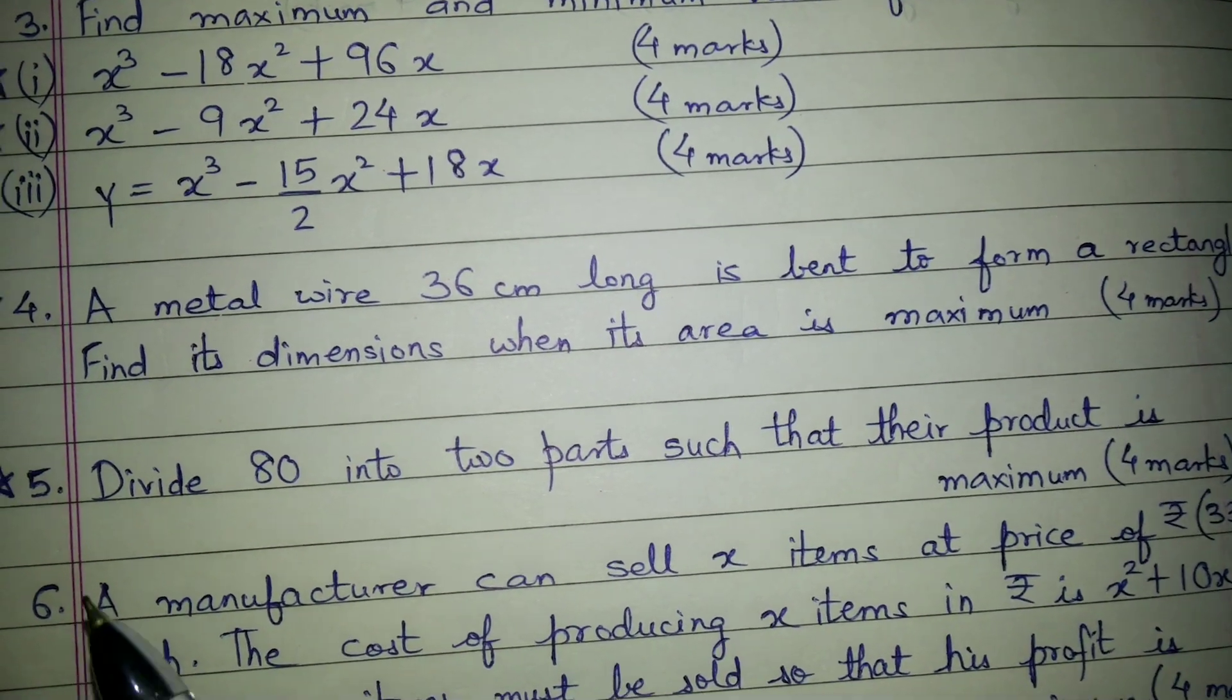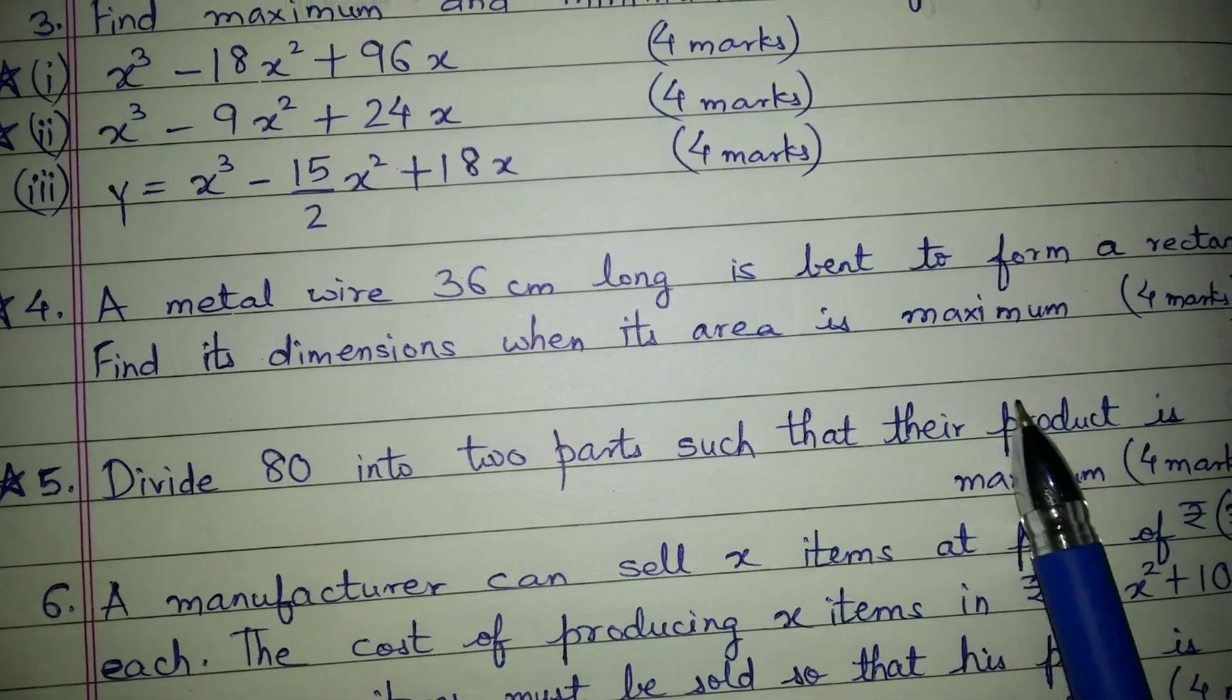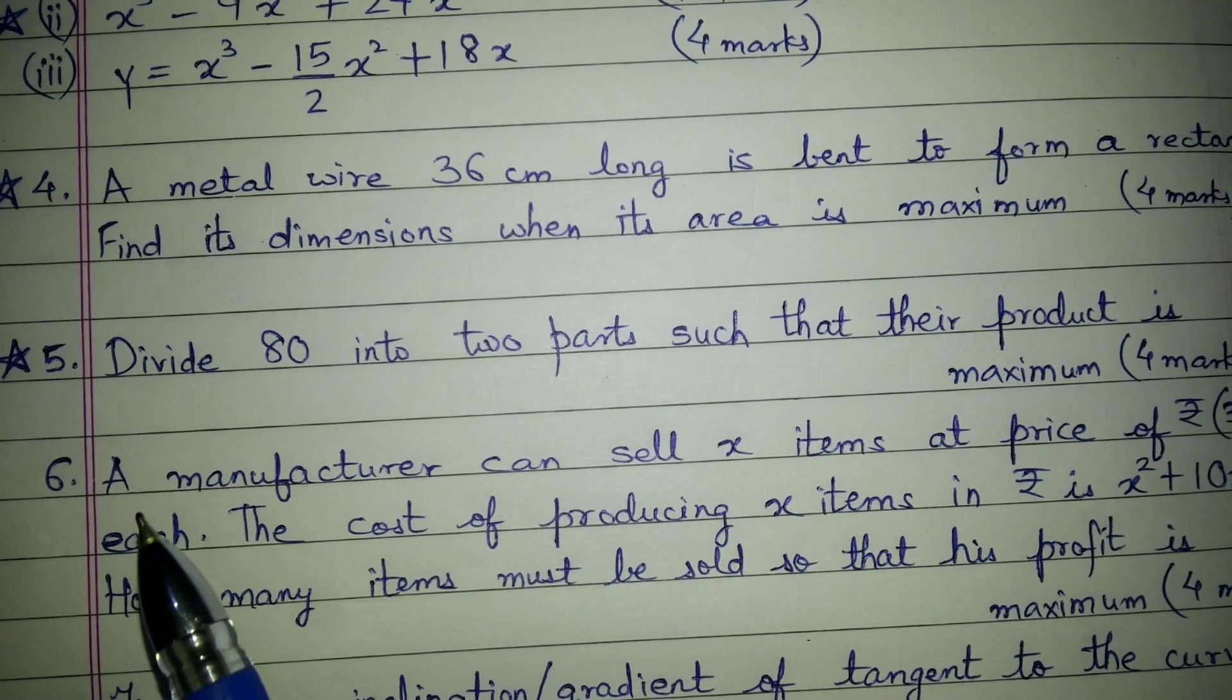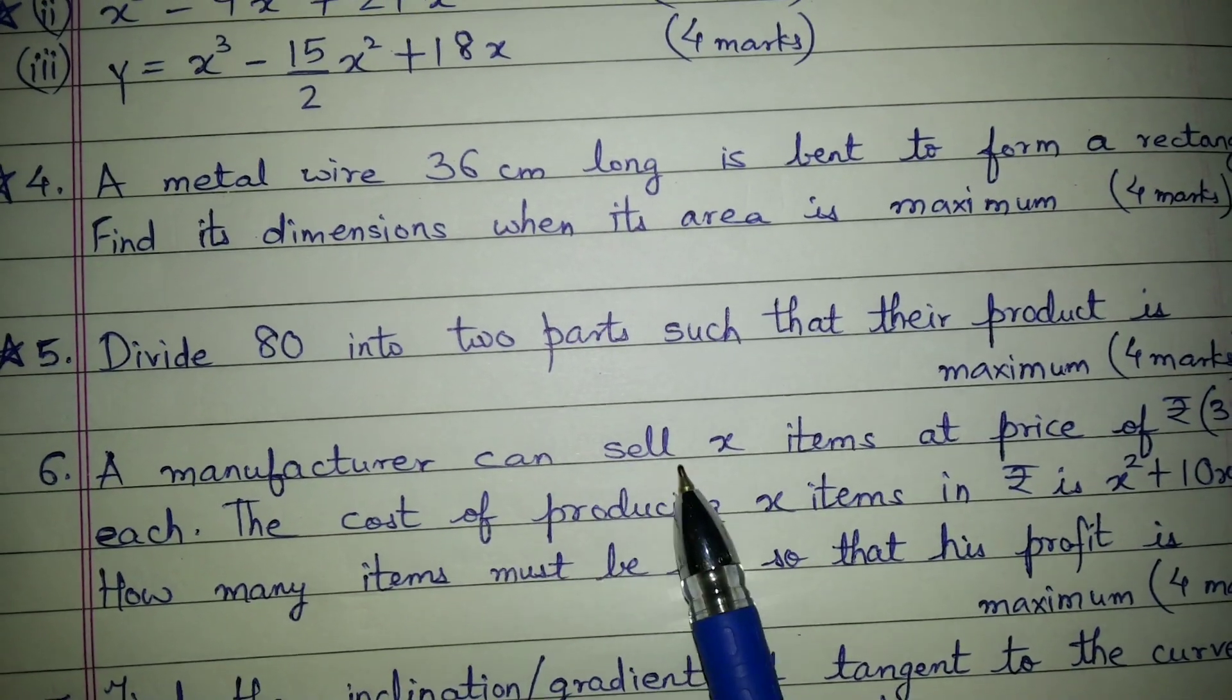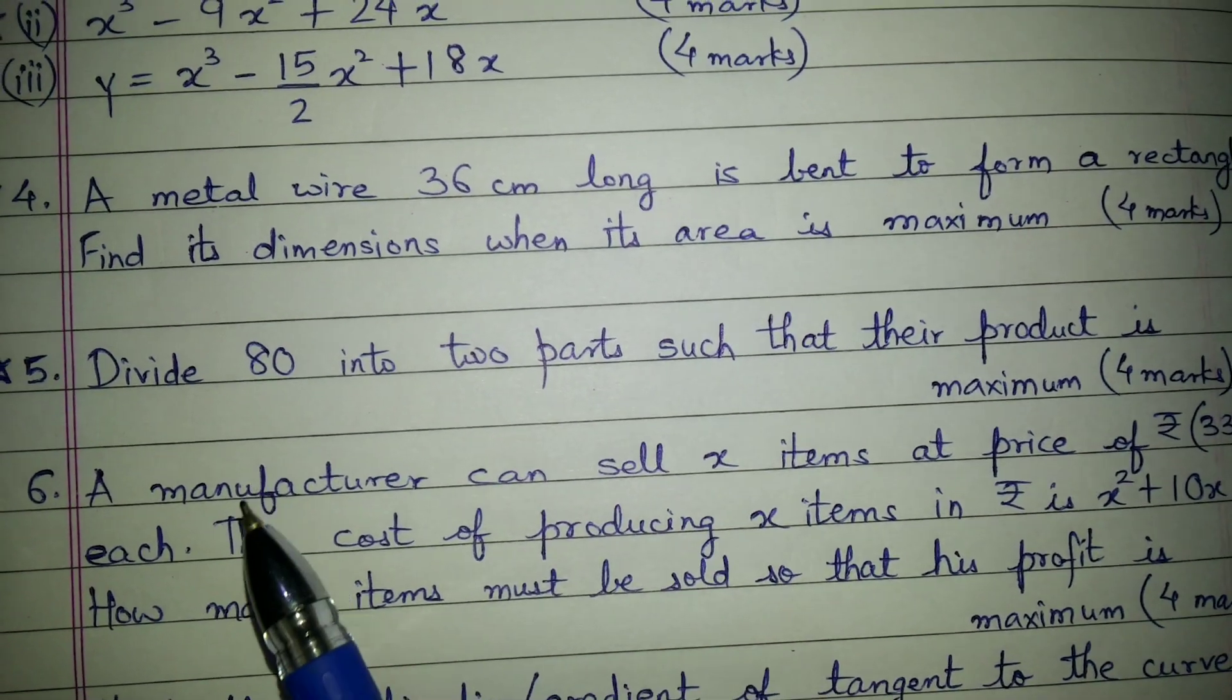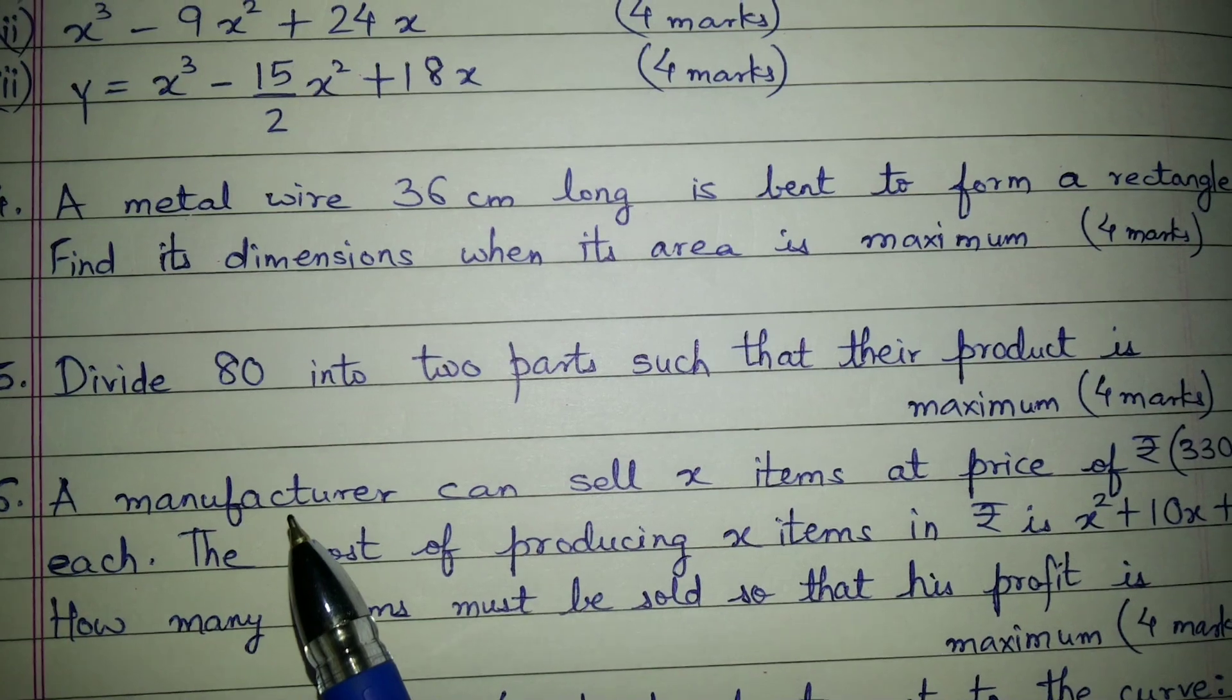This can be asked for four marks, or divide 80 into two parts such that the product is maximum. It can be asked for four marks. So question number four, question number five these are most important. Then question number six also a word problem related to maximum and minimum value.